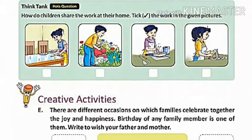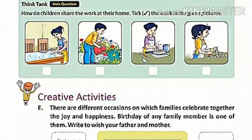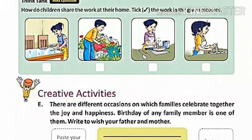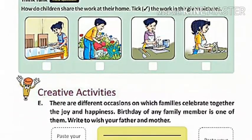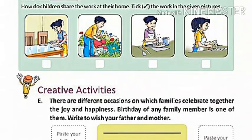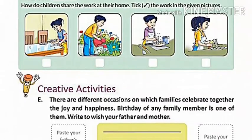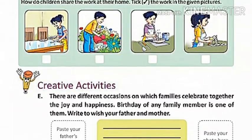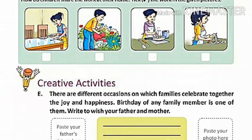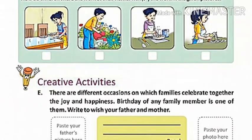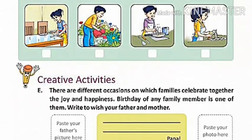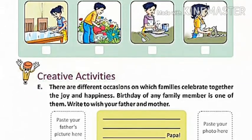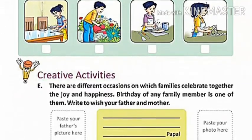Now we have another exercise from the same page — page 14: 'Think Tank.' How do children share the work at their home? There are four pictures. You will have to identify the correct work shown in the pictures — how children are working and helping their parents at home.